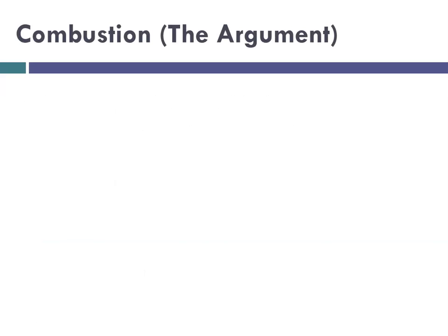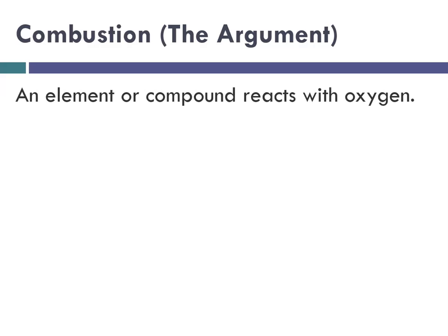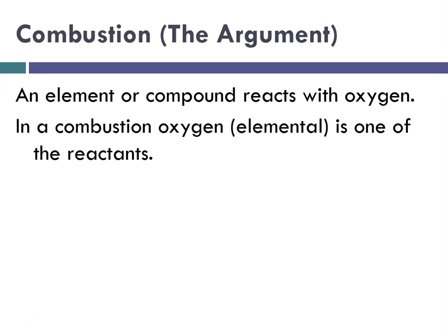The last type is combustion, sometimes called the argument. An element or compound reacts with oxygen, and in a combustion with elemental oxygen you usually see heat or light produced. Remember that elemental oxygen exists as a diatomic molecule O₂, so if you see O₂ on the reactant side, you know it's a combustion.